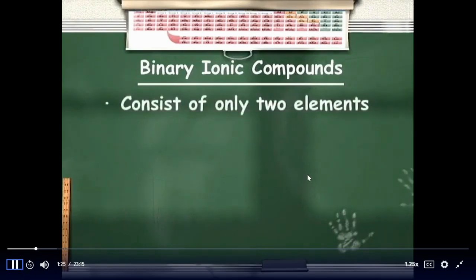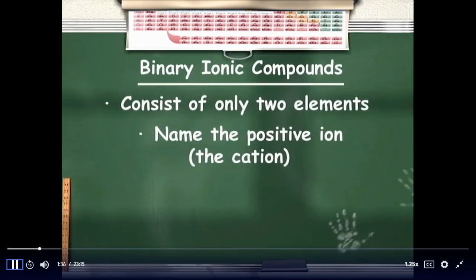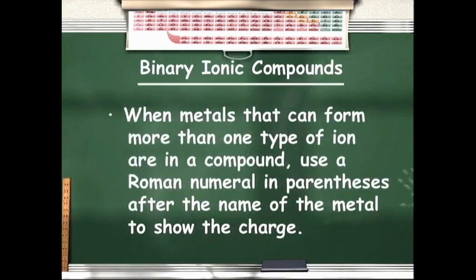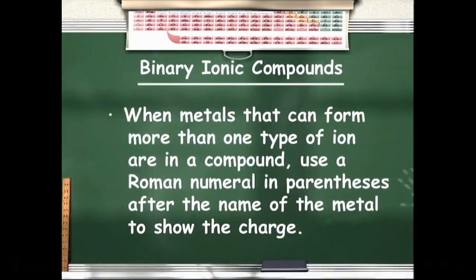Binary ionic compounds consist of only two elements — a metal and a non-metal. To name them: name the positive ion (cation) first — usually simply the name of the metal. Then name the negative ion (anion) — the name of the non-metal with the ending of the root word changed to '-ide.' Some metals can form more than one type of ion; for those, use a Roman numeral in parentheses after the metal name to show the charge — this is called the stock system of nomenclature.